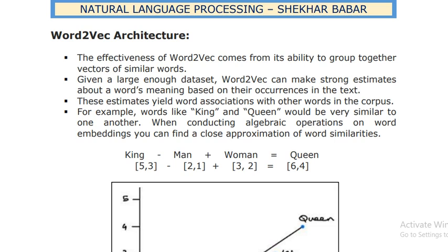The effectiveness of Word2Vec comes from its ability to group together the vectors of similar words. Given a large enough dataset, Word2Vec can make a strong estimate about a word's meaning based on its occurrences in the text. These estimates yield word associations with other words in a corpus. For example, words like 'king' and 'queen' would be very similar to one another when conducting algebraic operations on the word embeddings.